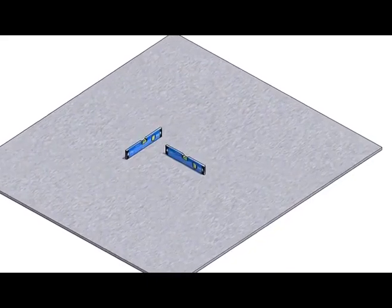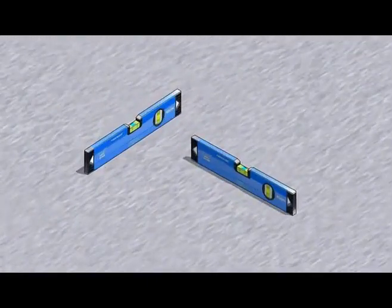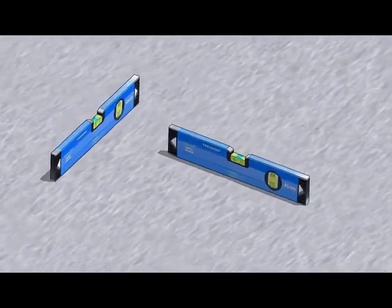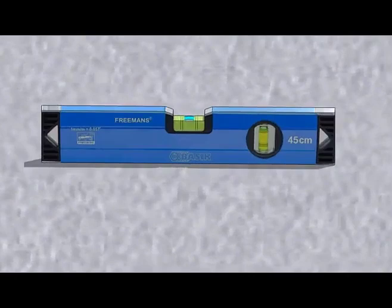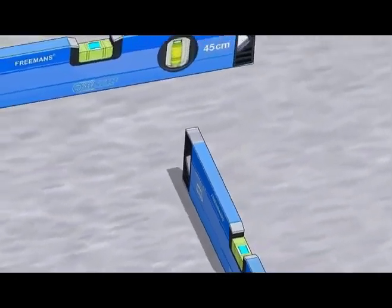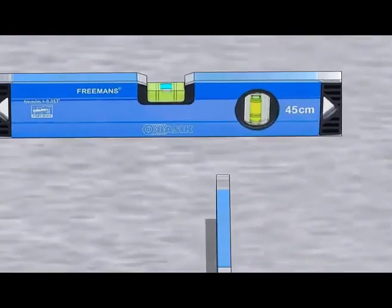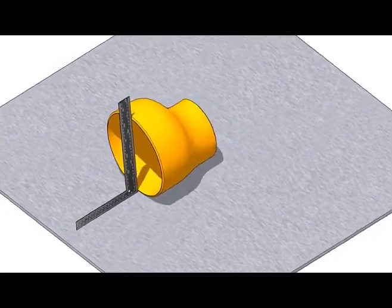First thing to do is to choose a leveled plate or platform. Put the reducer on the plate with the flat portion facing to the bottom.